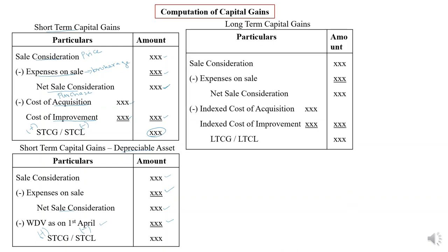Now moving on to long-term capital gain. For long-term capital gain, till net sale consideration the process is the same — from the selling price deduct expenses on sale to arrive at net sale consideration. From this you have to deduct index cost of acquisition and index cost of improvement. The resultant answer — if positive it is long-term gain; if negative it is long-term loss.